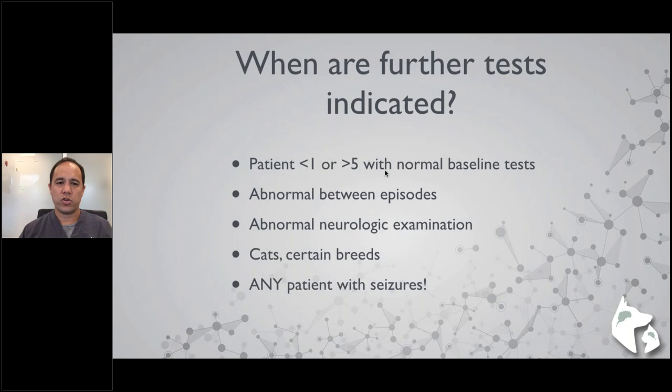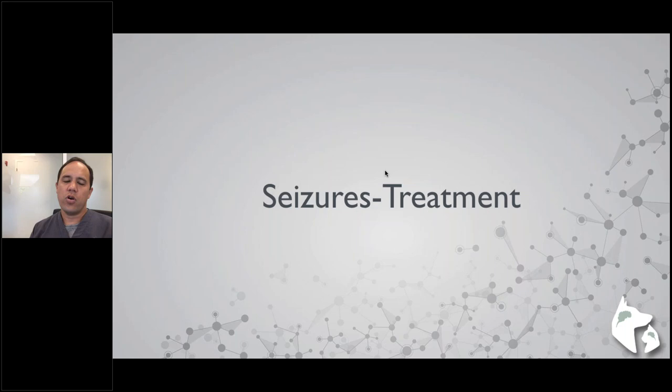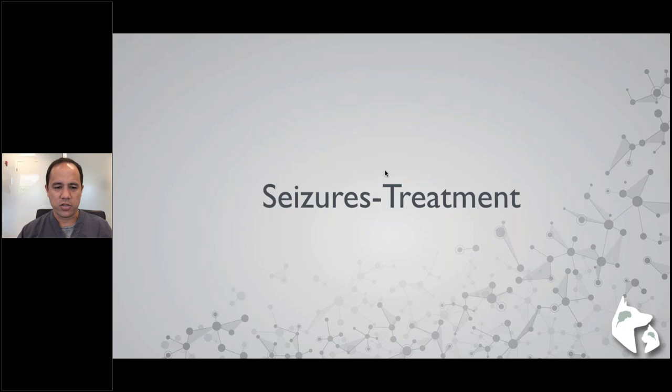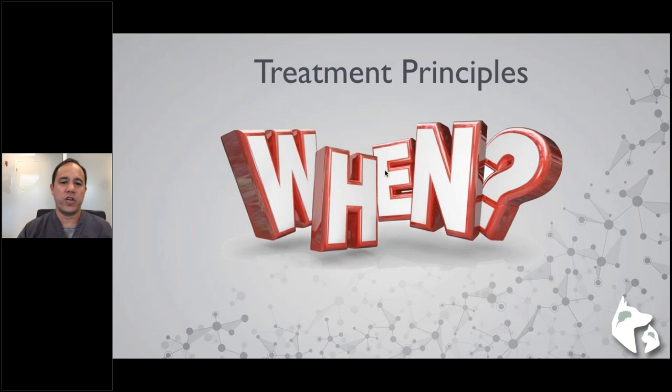Now transitioning to treatment of seizures. There is no one best way to treat and no single best drug. Instead, I'll focus on treatment principles. Treatment principle number one: when should we start treatment? Treatment is indicated for patients with any episode of unprovoked status epilepticus, patients with multiple seizures in a short period, patients where frequency or severity are increasing over time, and patients with a suspected or diagnosed progressive disorder such as inflammatory brain disease or a brain tumor.